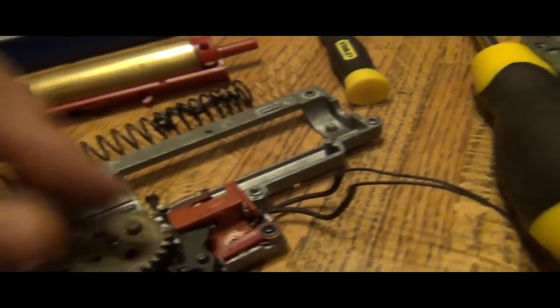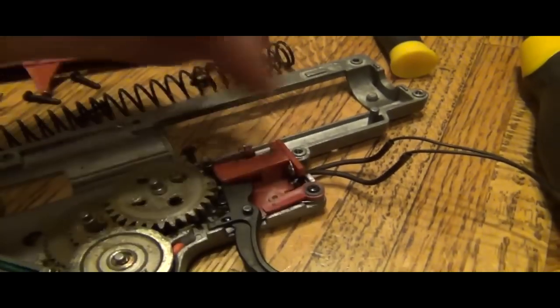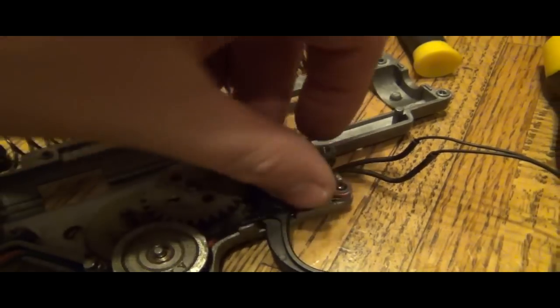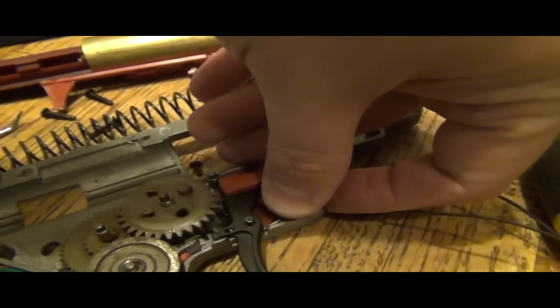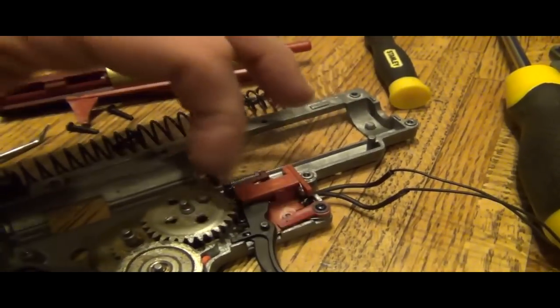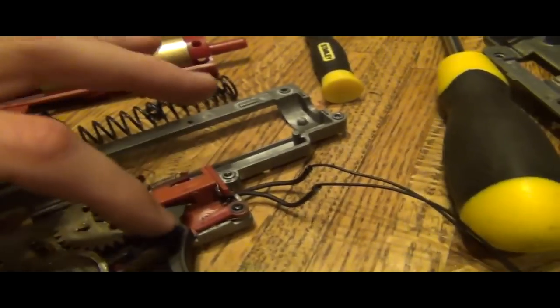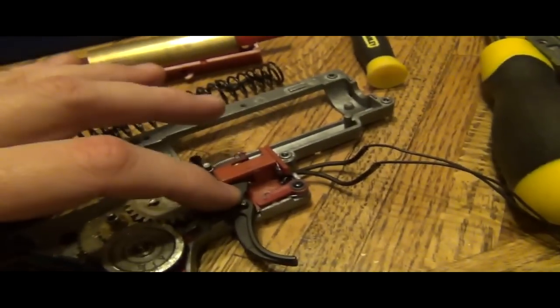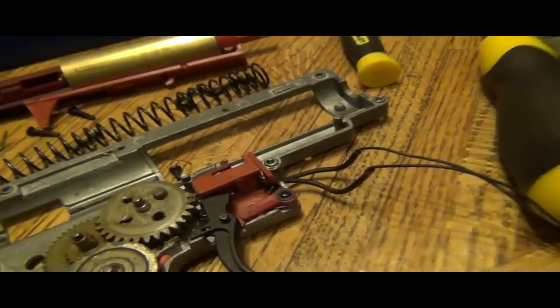There was one thing I did forget and I'm going to mention it now so it's at least in the video. How this functions is the selector plate hits this and it moves up to block the trigger from moving forward. So if your safety's not working, you would look at something like this. Maybe the selector plate's not hitting this evenly. Maybe it's not stepping in front of the trigger. Maybe it gets caught. These are things you can look at.